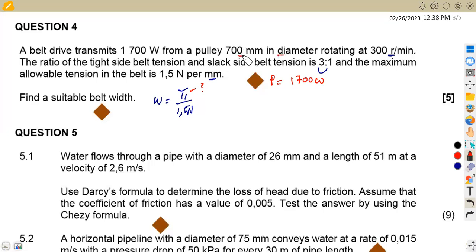Then the diameter, which is 700 millimeters. If you are to convert this to meters, you have to divide by 1000, so that will be 0.7 meters. And also given the rotation in revs per minute, that is 300 revs per minute. And also the ratio between the tight side and the slack side, we know that T1 over T2 is equal to 3 to 1, which is 3 over 1.